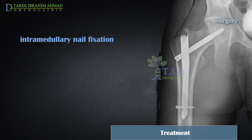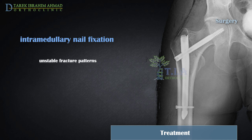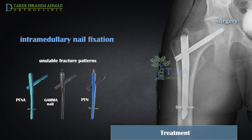Intramedullary nailing using a gamma nail or proximal femoral nail (PFN): This surgical method is employed for unstable fractures and involves placing an intramedullary nail into the central canal of the femur, passing across the fracture site. Both ends of the intramedullary nail are secured to the bone with screws.